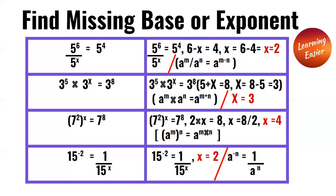15 to the power of negative 2 is equal to 1 over 15 to the power of x. Since in 15 to the power of negative 2, negative 2 is the exponent, x would be equal to 2, since we found the reciprocal of 15 to the power of negative 2, which is equal to 1 over 15 to the power of 2.